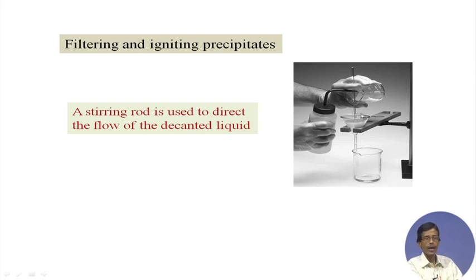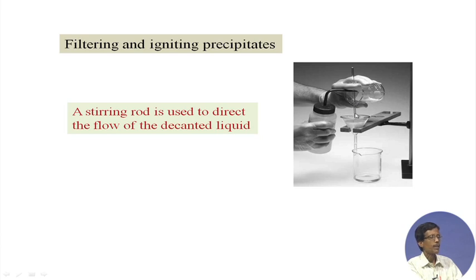Every time you must take care and these techniques — not only handling the apparatus but your technique itself must be precise. You put the water jet and transfer the last precipitate to the filter paper. The stirring rod is used to direct the flow of the decanted liquid initially, and then at the end with the water jet, water comes along the side of this rod and falls on the filter paper.